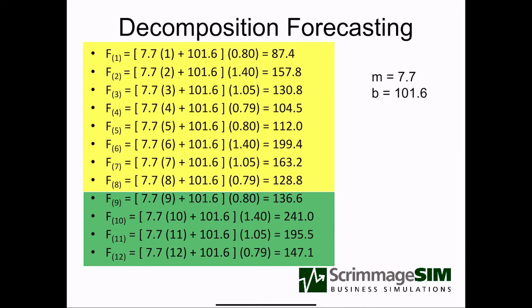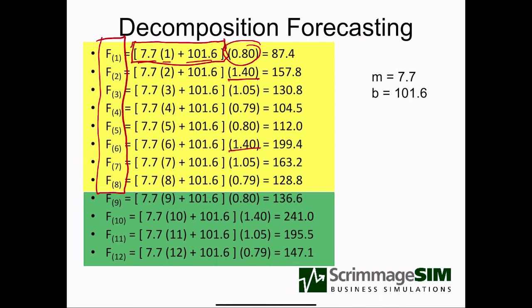Now with the seasonal factors and our regression model, we can forecast. We forecast for the eight periods of data we have to see how well the model fits — it ought to fit well because we designed the model and fit these parameters to this data. The forecast has two components: first, regression — mx + b, where m times the period x plus b — and then this entire quantity is multiplied by the seasonal factor. We adjust up or down by the seasons: summer is a big season so we adjust up, giving us a forecast with both trend and seasonal components.